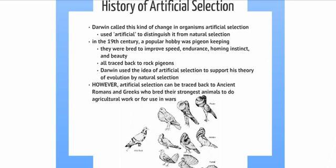However, Darwin is not the first person to use artificial selection, because it can be traced back to ancient Romans and Greeks, who bred their strongest animals for agricultural work or for use in wars.